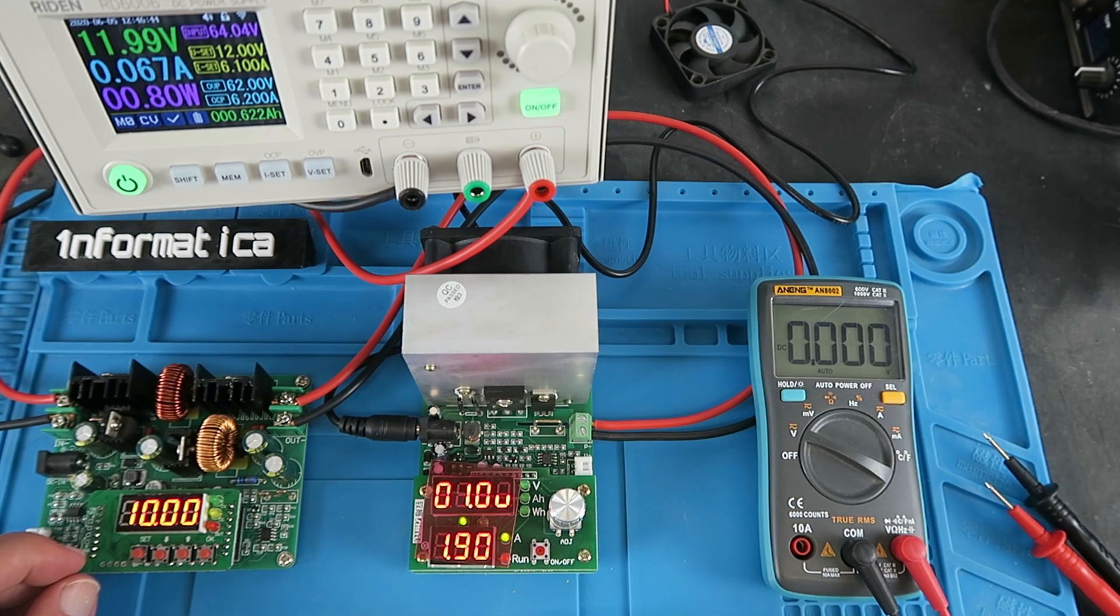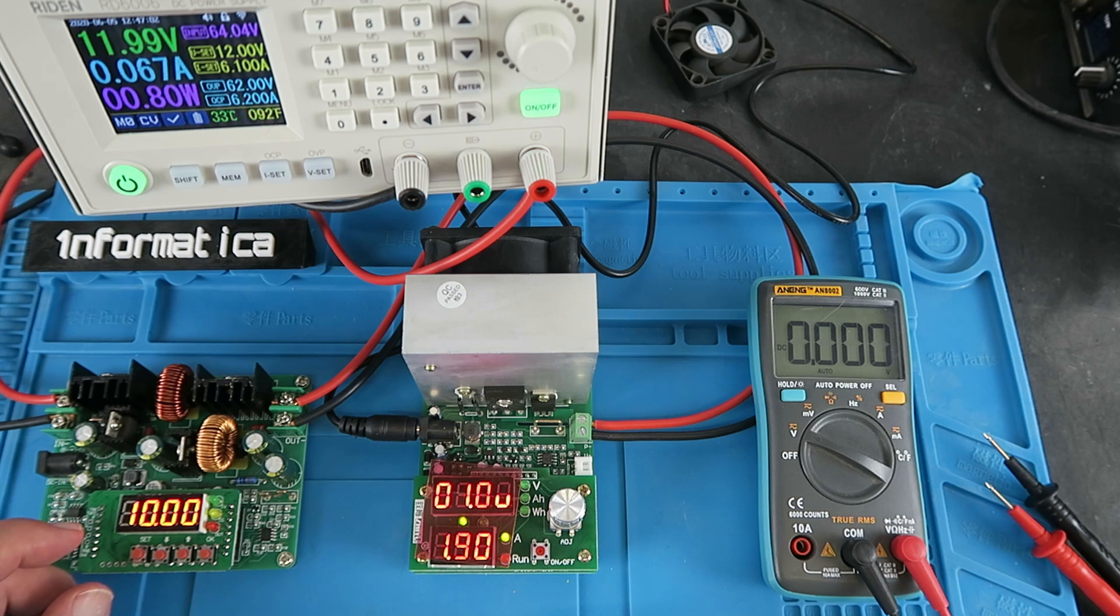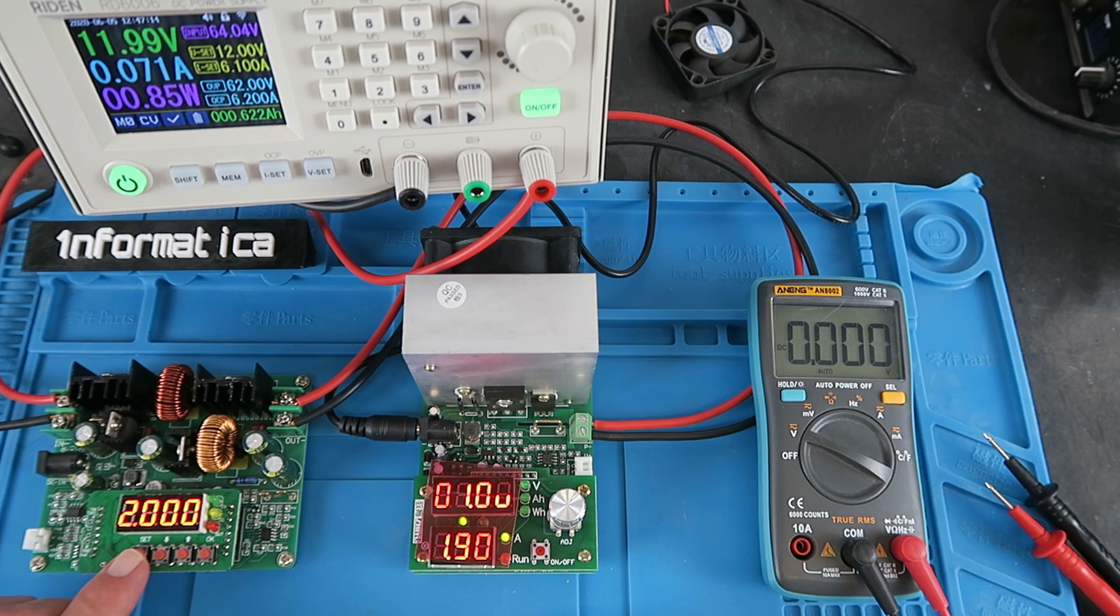Let's look now at it in its constant current mode. This is especially important if you're testing a circuit for the first time and you want to make sure that the current is limited. Alternatively, you may be charging lithium-ion cells or other batteries where it's necessary to limit the current. I've set the voltage now to 10 volts and the current is set at 2 amps.